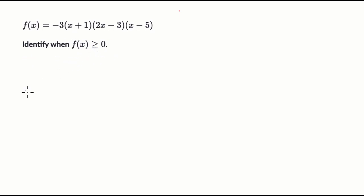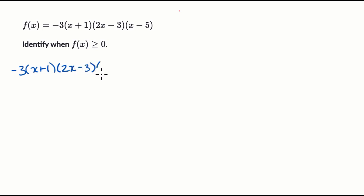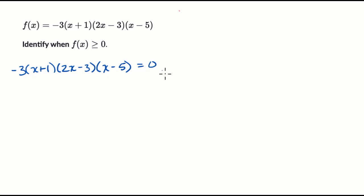So if we just set all of this equal to zero — negative three times x plus one, times two x minus three, times x minus five equals zero — we know that if we take the product of a bunch of things and it equals zero, that means any one of these things equaling zero would make this whole statement true.